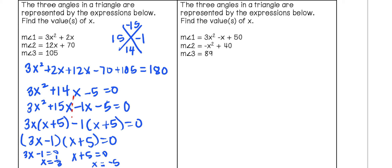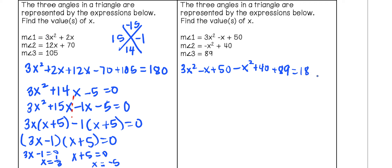For the last example, the three triangle angles are 3x squared minus x plus 50, negative x squared plus 40, and 89. Since they're all angles in a triangle, their sum must equal 180 degrees. Adding all three together and setting the equation equal to 0, combining like terms gives 2x squared minus x minus 1 equals 0.